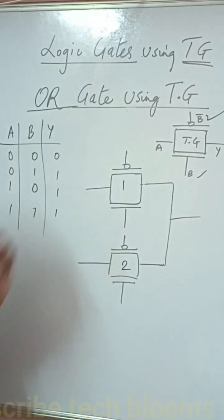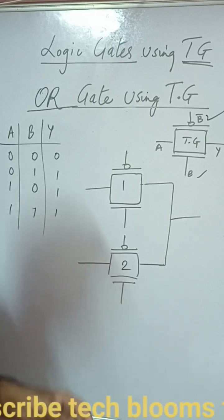Now here we need to have a control signal in order to activate the transmission gate such that the input goes to the output.